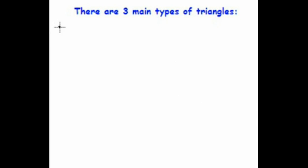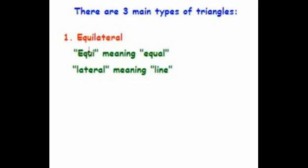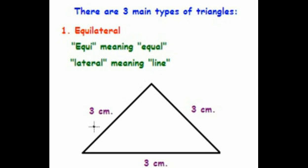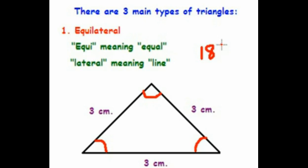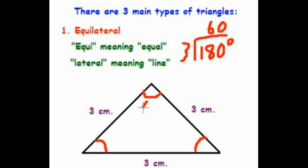There are three main types of triangles. The first, perhaps one of the most widely used, is the equilateral triangle. 'Equal' means equal and 'lateral' means line, so all of the sides are the same length — in this case, all three centimeters. Also in an equilateral triangle, all of the angles are the same. And in all triangles, the angles add up to 180 degrees. So 180 divided by 3 equals 60 — in an equilateral triangle, the angles will always, always, always measure 60 degrees.